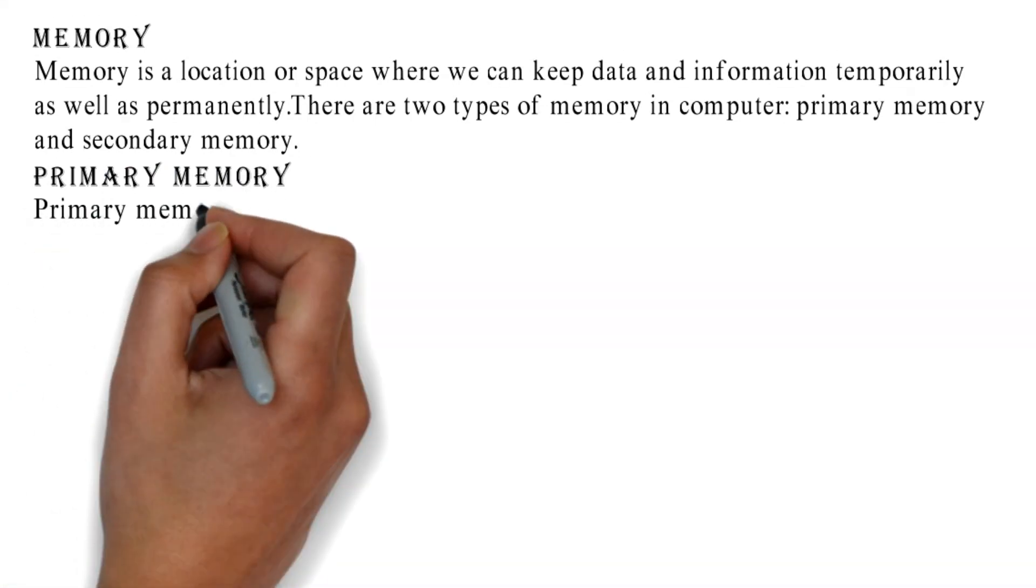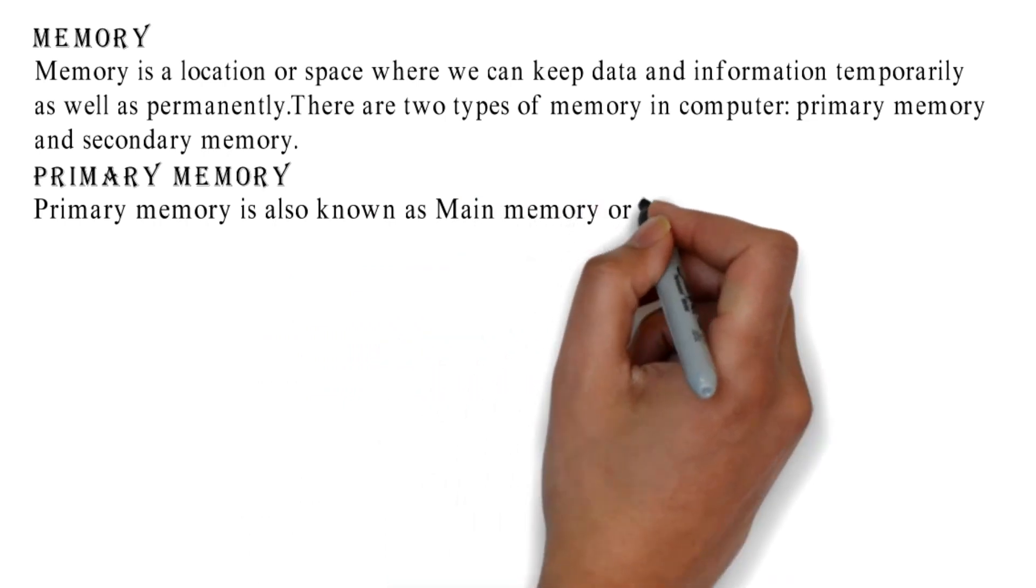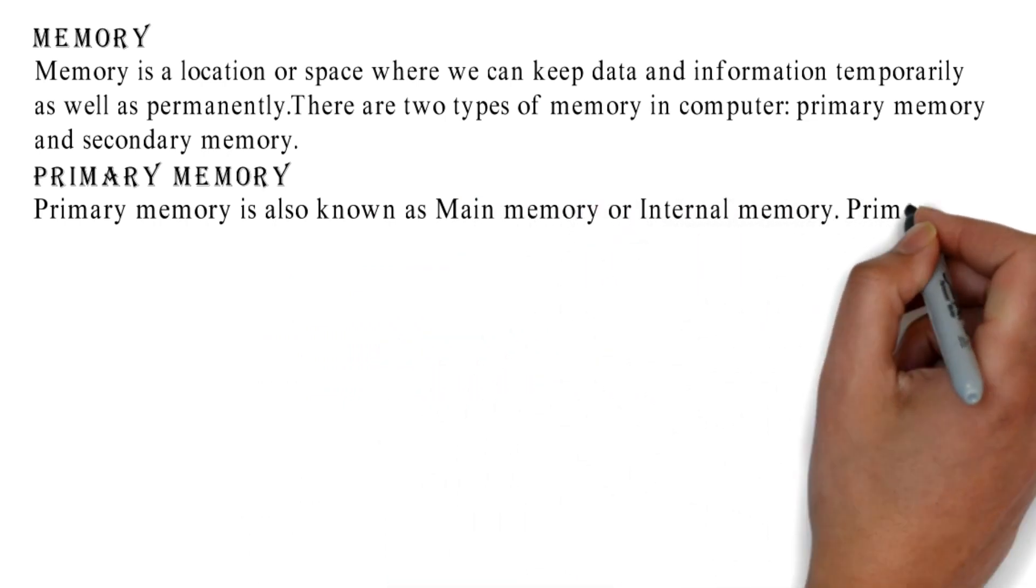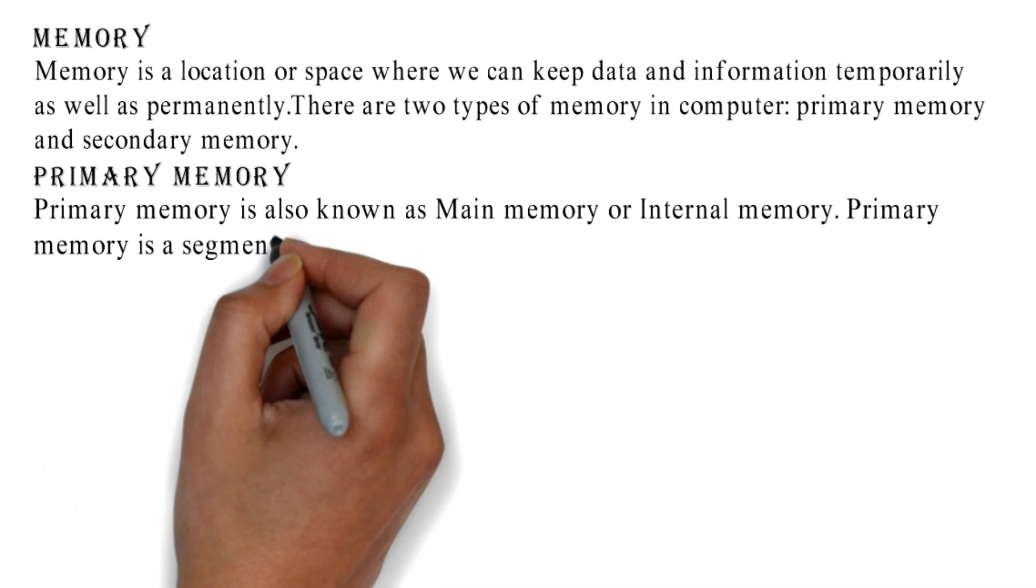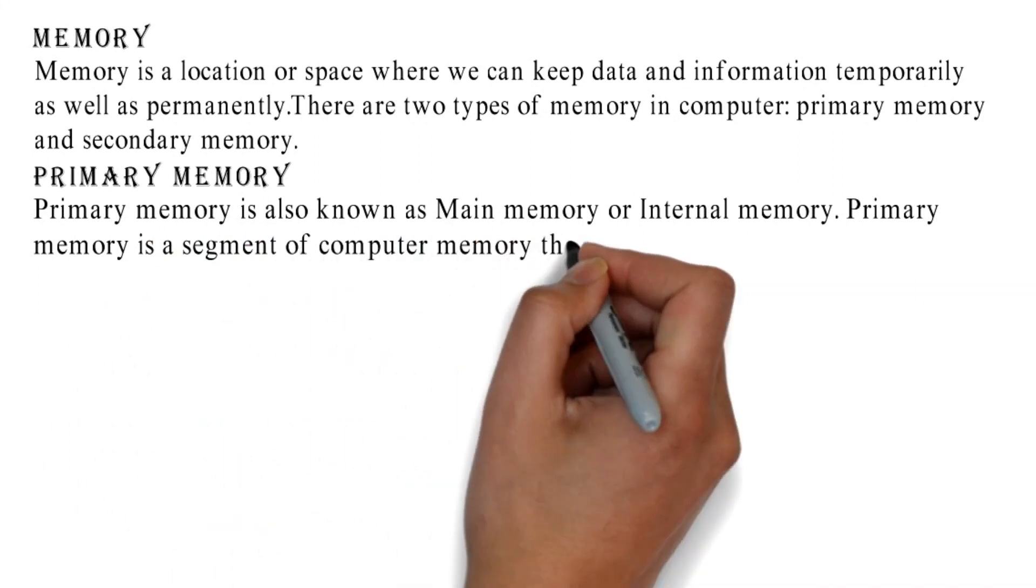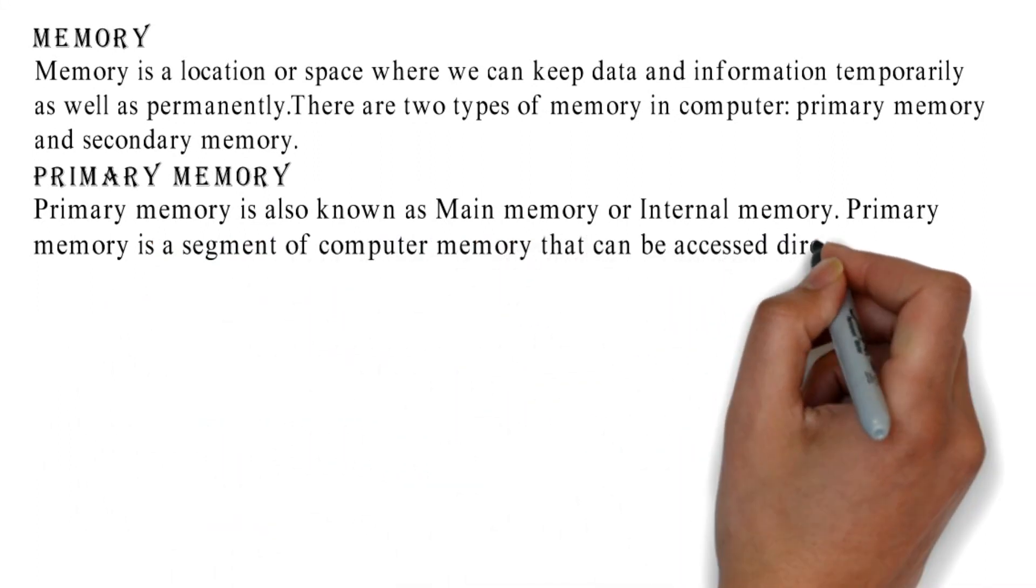Primary memory is also known as main memory or internal memory. Primary memory is a segment of computer memory that can be accessed directly by the processor.